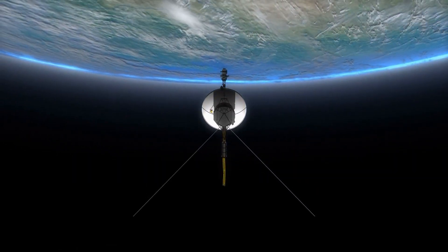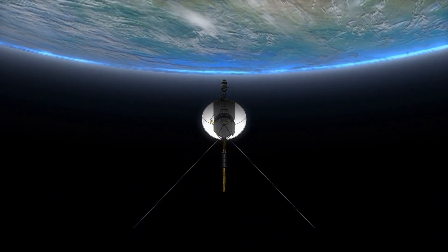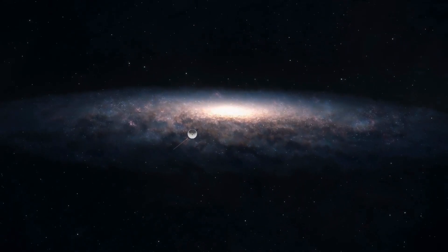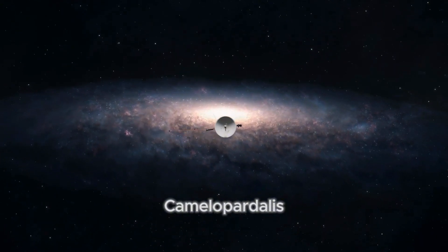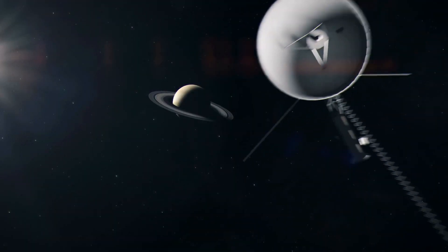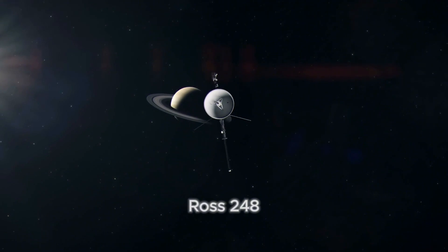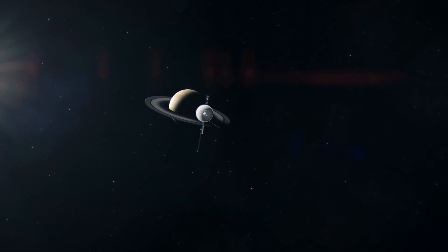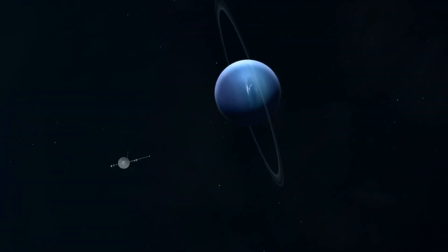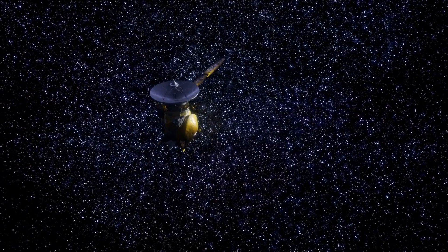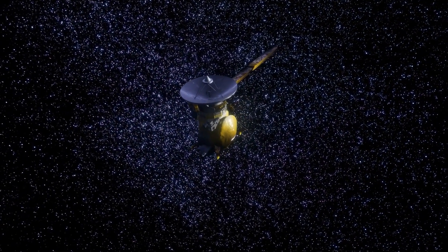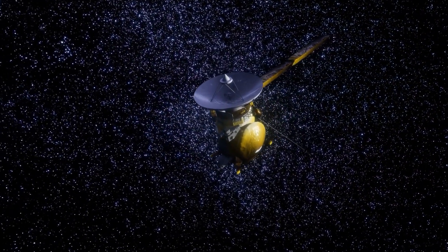Today, both Voyagers continue to drift further into interstellar space. Voyager 1 is heading toward a distant star in the constellation Camelopardalis, while Voyager 2 is on course for Ross 248. Though their power supplies will run out by 2030, their journey will carry them across the galaxy for millions of years. A testament to humanity's ingenuity and curiosity.